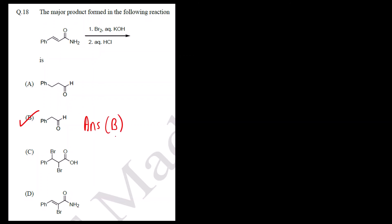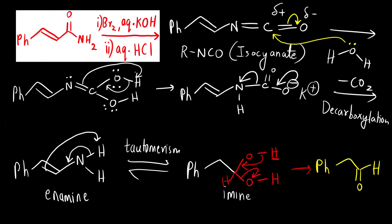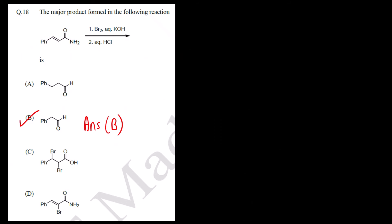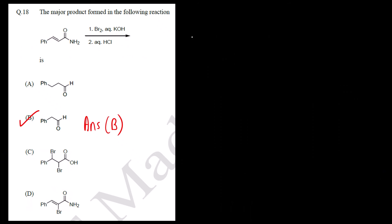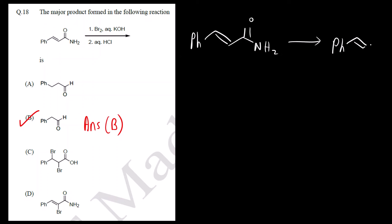The correct answer is option B. Now, do we have enough time to write the entire mechanism in an exam? No. Simply, you must know this is a Hofmann reaction, so you can draw the product straight away. The carbonyl is lost and we get an amine — a C=NH₂ group.